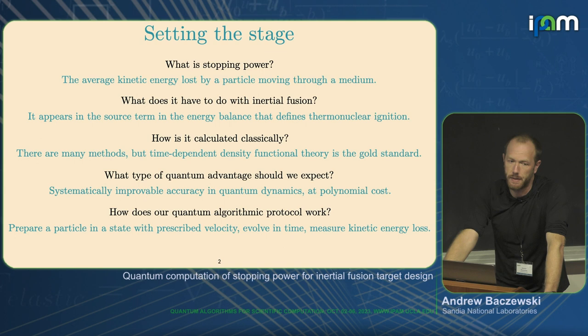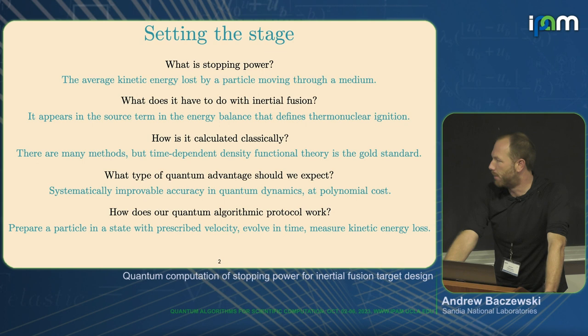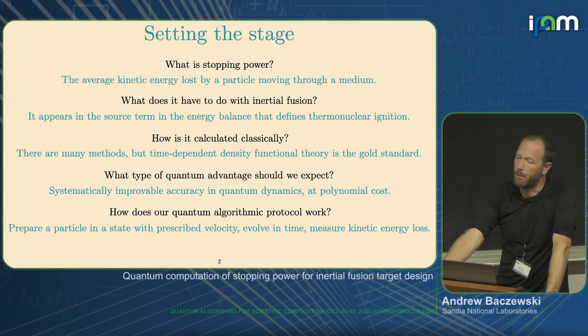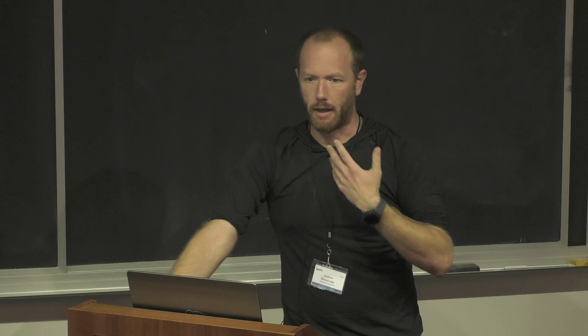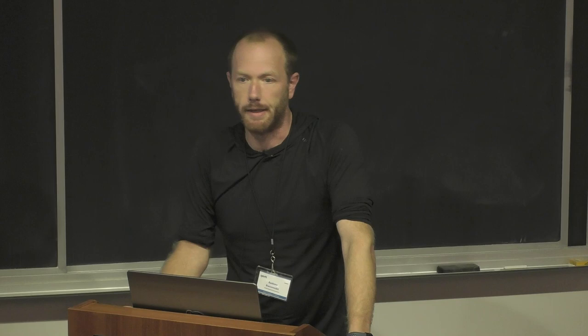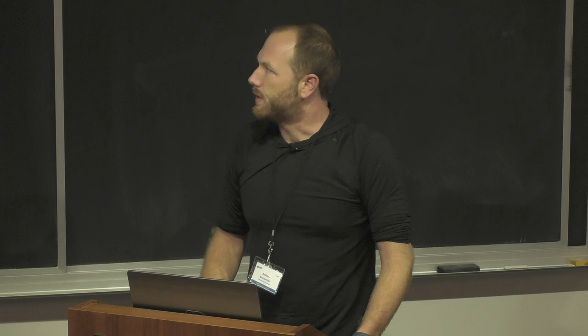The accuracy bar we're aiming at today is relatively high, but the costs are still relatively large. The aim is to achieve systematically improvable accuracy at polynomial cost — polynomial in the number of qubits. The quantum algorithmic protocol I'll describe is: prepare a particle in a state with a well-defined velocity, allow it to evolve in time through some medium in which it's stopping, and then measure the rate at which it loses kinetic energy. We're simply simulating this on a quantum computer.